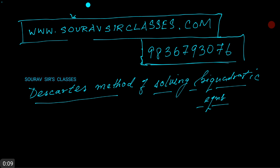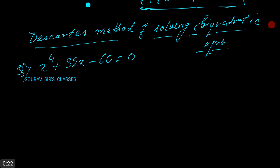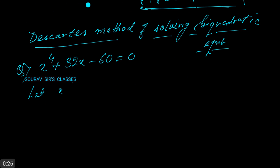We'll directly go to the question and see how to solve this: 2x to the power 4 plus 32x minus 60 equals to 0. Now let x to the power 4 plus 32x minus 60...